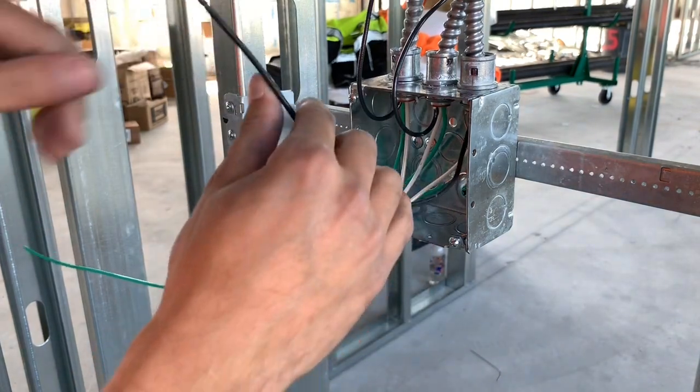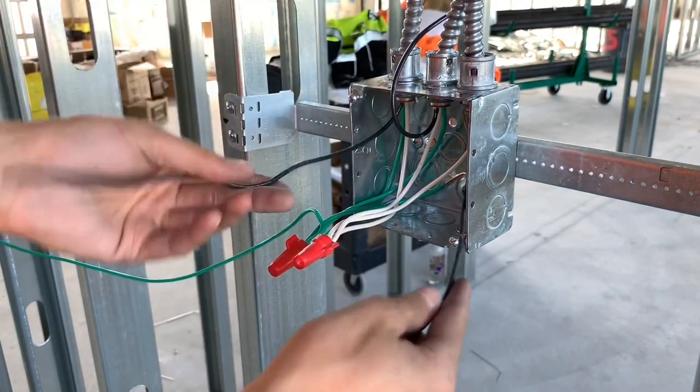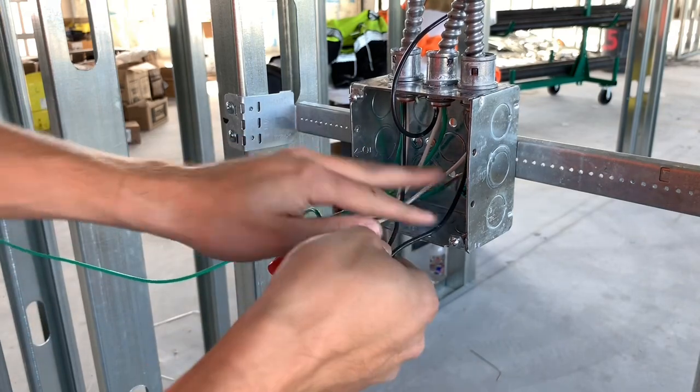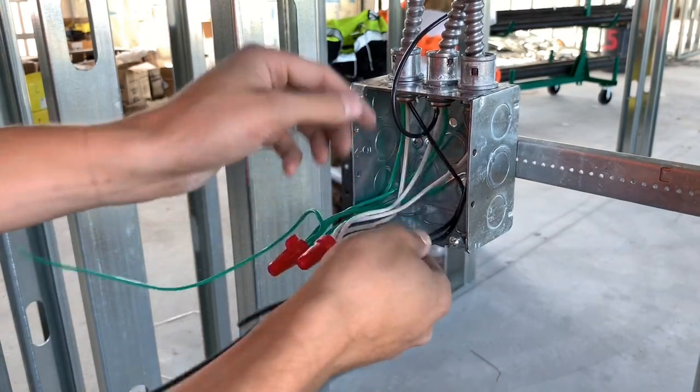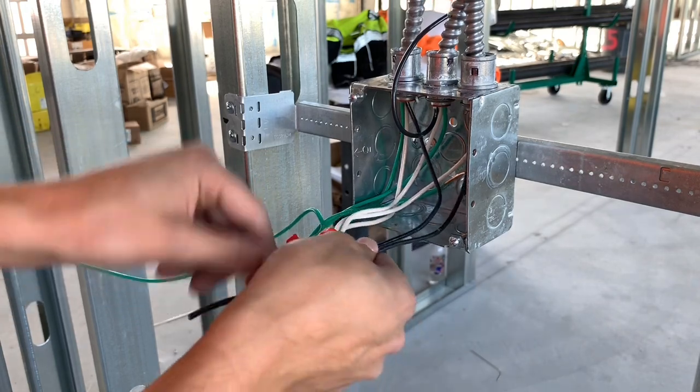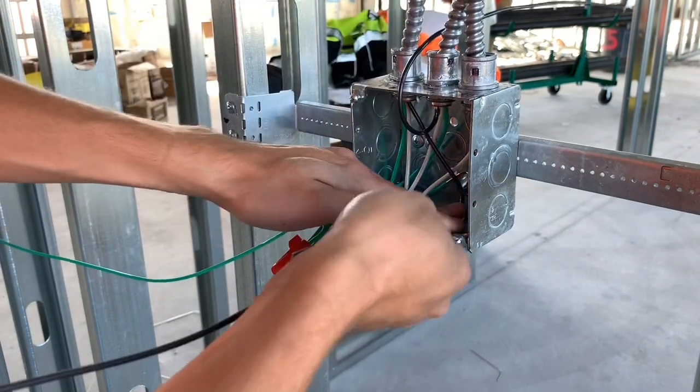And then you're going to want to make sure your switch leg is not tied in with the power. Otherwise the light will always be on until you fix it. So I got my two power wires here. My power out, my power in. Switch leg is right there. I'm going to keep that out of the way.